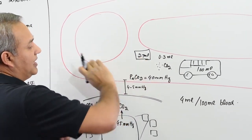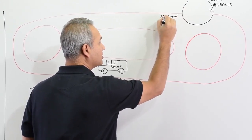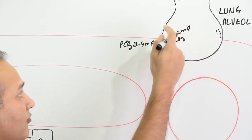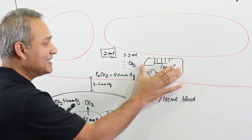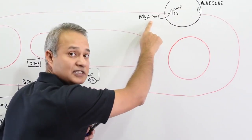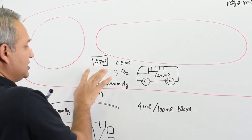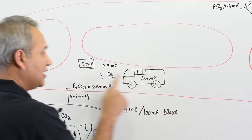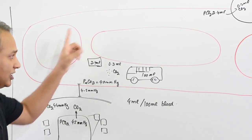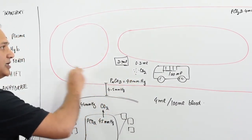When that same plasma goes to the lungs, 2.4 mL of CO2 stays and 0.3 mL is moved out. So the bus that contained 0.3 mL of dissolved CO2 gives off that 0.3 mL at the lungs and returns with 2.4 mL. In one cycle, 100 mL of blood gives off 0.3 mL — the volume changes from 2.7 to 2.4, then loads 0.3 again. The dissolved form transports 0.3 mL per cycle.